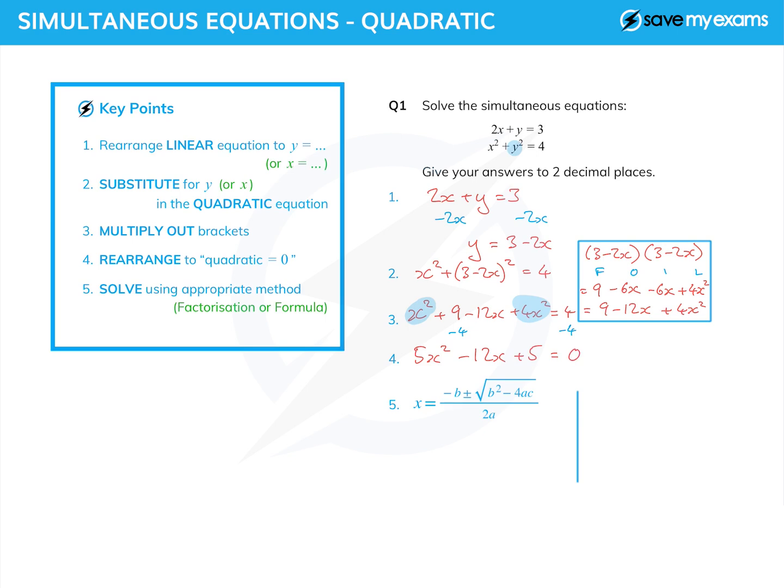Now, because of the degree of accuracy, I know I need to use the formula. And I've printed the formula here for you. GCSE students do need to remember that. If you've looked at my tutorial on using the quadratic formula, you will know that I like to simplify things first by writing down A equals, B equals, and C equals. Well, A is five, that's the number in front of the x squared. B is equal to minus 12, that's the number in front of x. And C is the number term, which is also five.